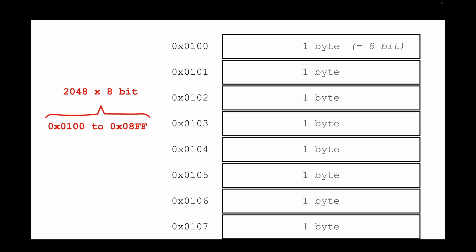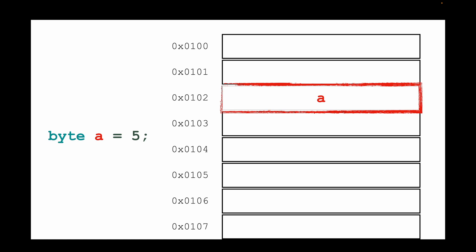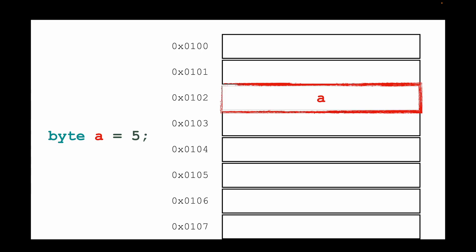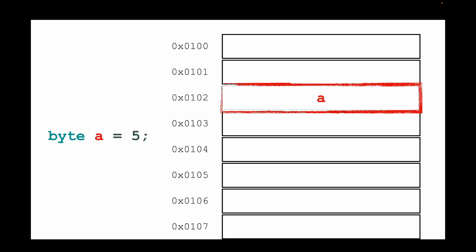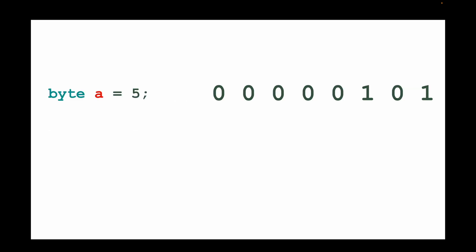So if you create a variable — for example, a byte variable called 'a' equals 5 — inside of the SRAM one of these cells will be reserved for your variable, and the variable will then be stored inside of this allocated space. Inside of RAM, computers only work with zeros and ones, so you might be confused as to how the Arduino stores the number 5 using zeros and ones, using eight bits.